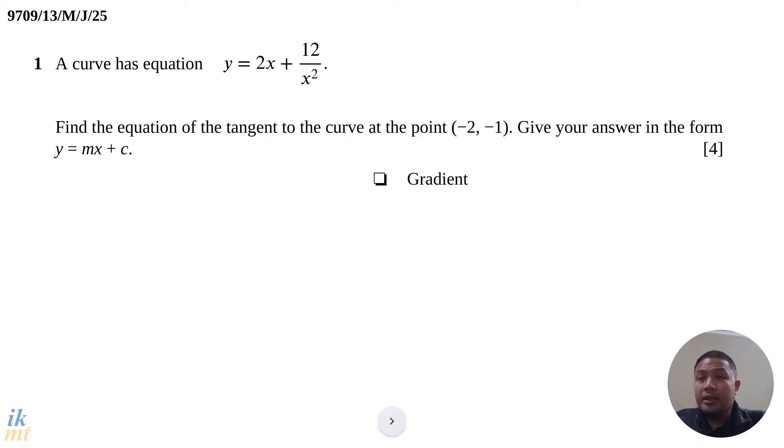Every time you're asked about finding the equation of a line, make sure that you have these two pieces of information: the gradient of the line and the coordinates of one point on the line.